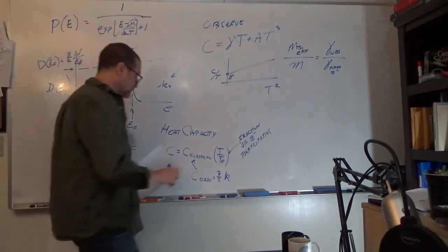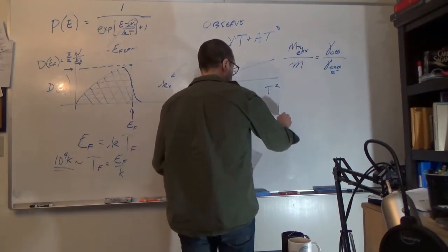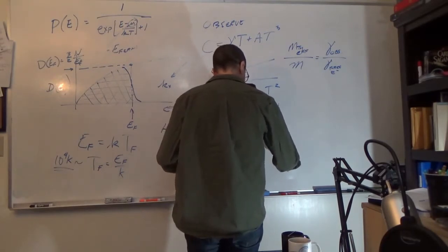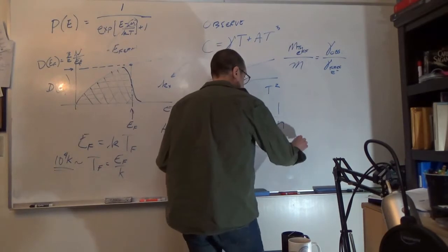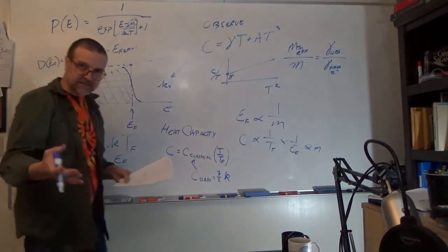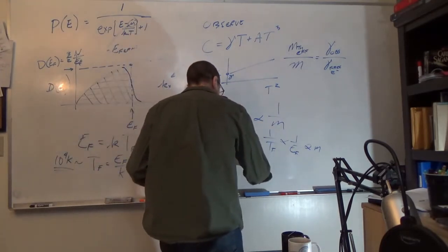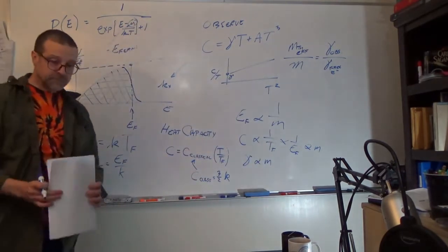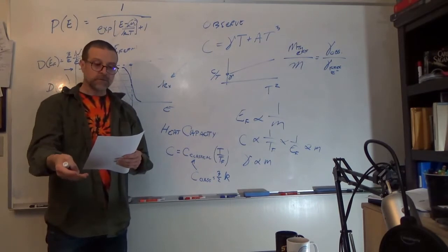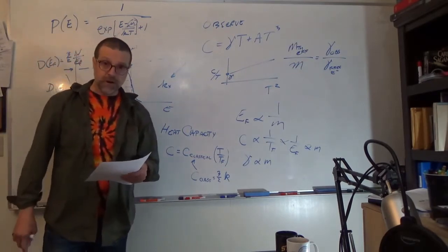The thermal effective mass divided by the bare electron mass goes as the observed gamma divided by the gamma of the free electron gas. This is a first-order correction to our free electron gas model to better fit experiment. What comes out is that the Fermi energy goes as one over the mass, the heat capacity goes as one over the Fermi energy and the electron mass, which makes sense if you think about energy for heat capacity being stored in the kinetic energy of electrons. Let's continue and look at how, within a semi-classical framework, we can connect this to the electrical conductivity of metals.